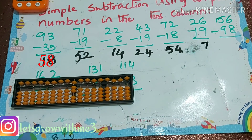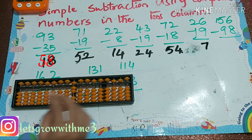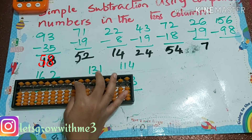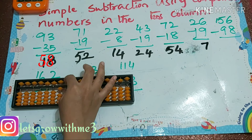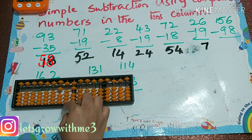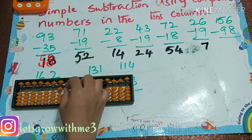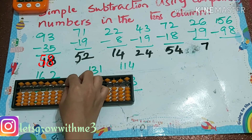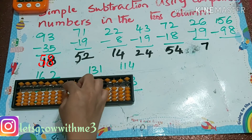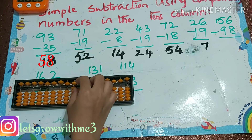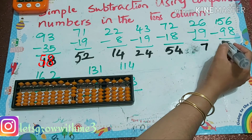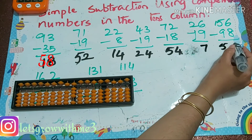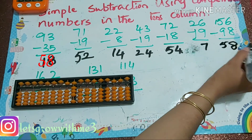Next problem: 156 minus 98. Minus 9 — minus 10 plus 1. Minus 8 — minus 10 plus 2. Our answer is 58.